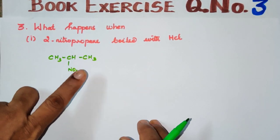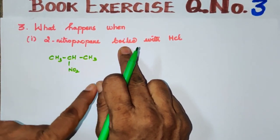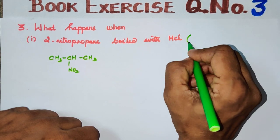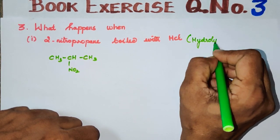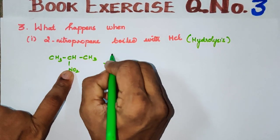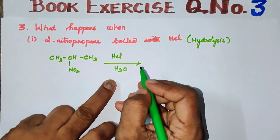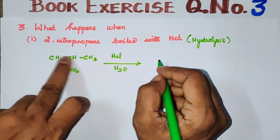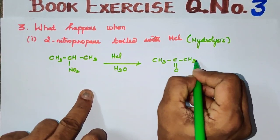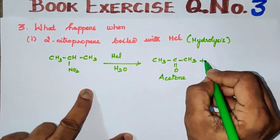Now we have the reactant formula. The reaction carried out is boiling with HCl, which is a hydrolysis reaction. The product will always be a ketone — in this case, CH3-C(=O)-CH3, which is a 3-carbon ketone whose name is acetone.